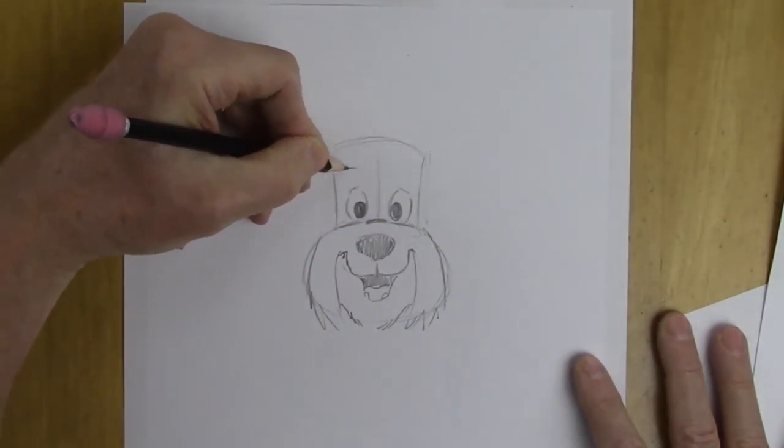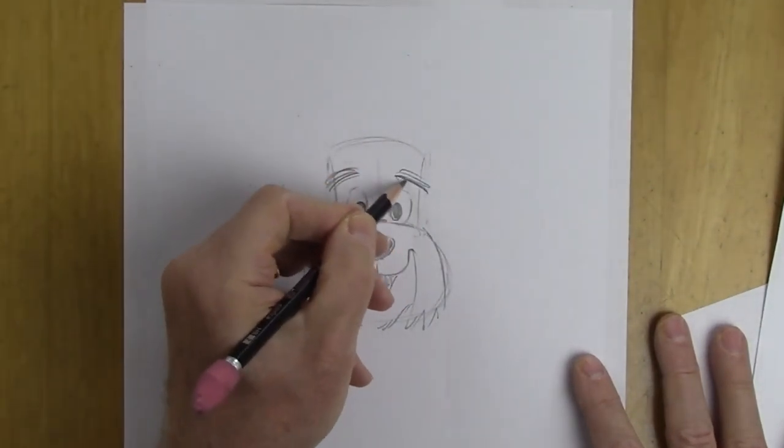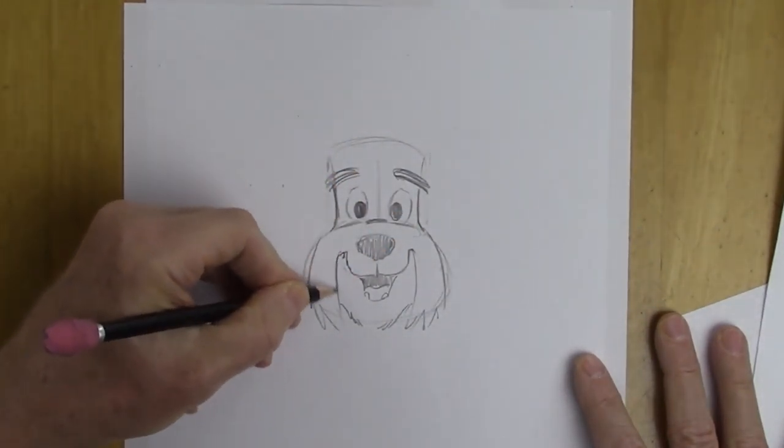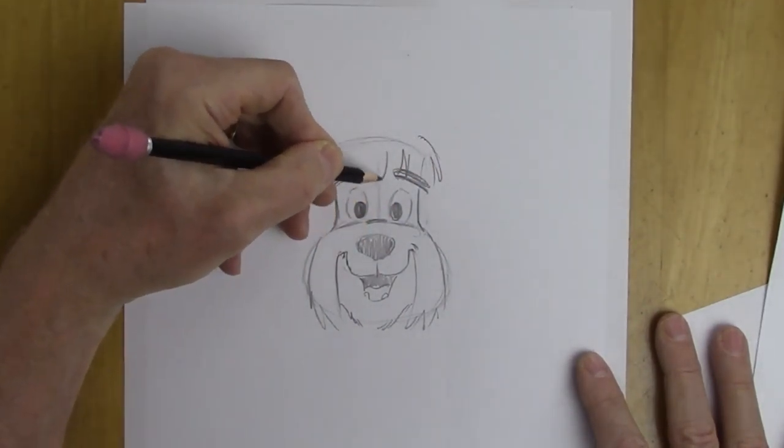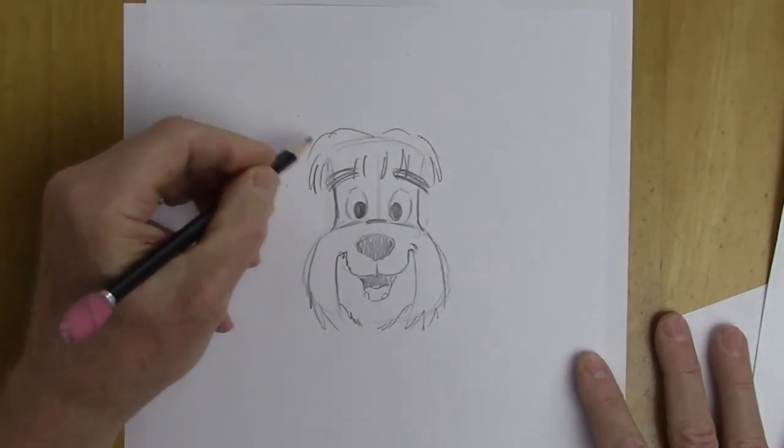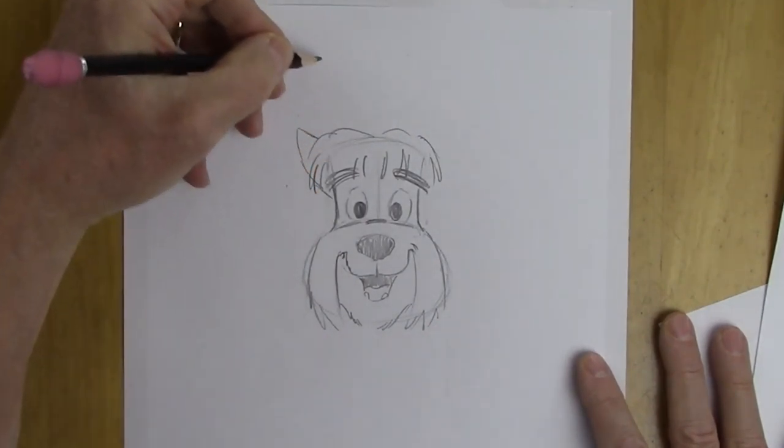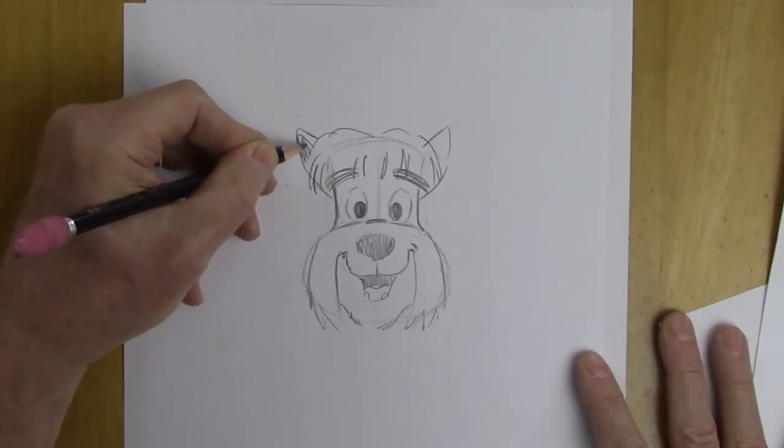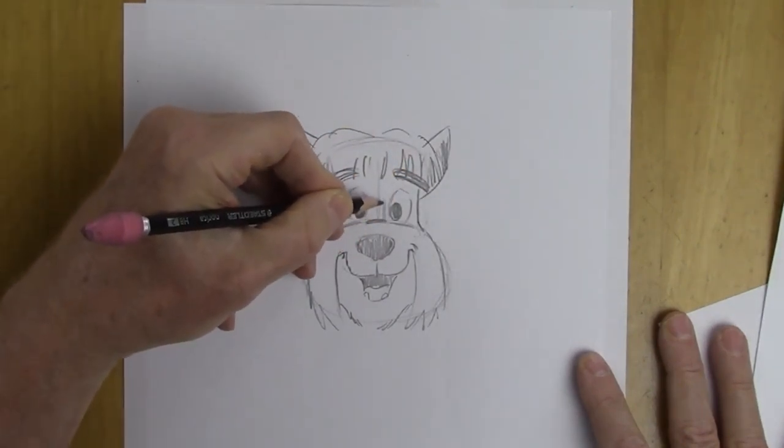So let's add some kind of bushy eyebrows on top. And we're going to add some bangs of hair coming off over the side of the head. Now ears on animals come off at a 45 degree angle, not straight up or straight out. So we're going to give them ears like this. And we're going to just add a little bit of shading inside. A little bit of shadow up here.